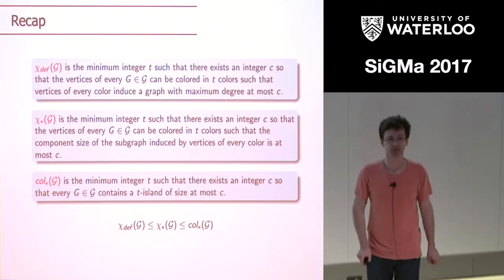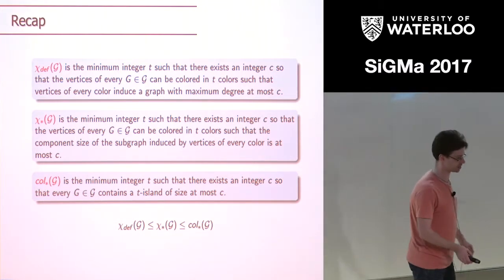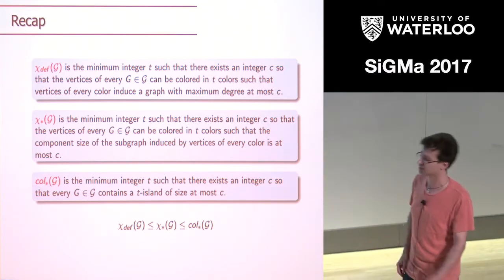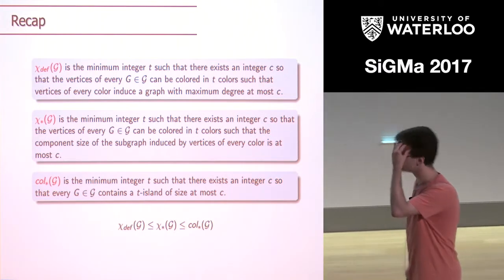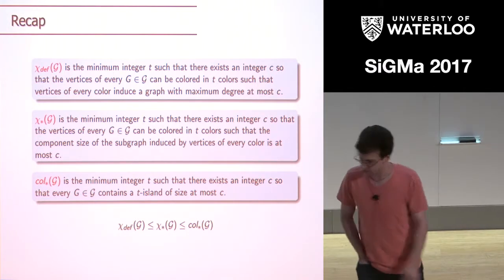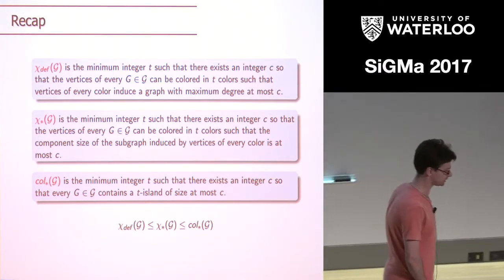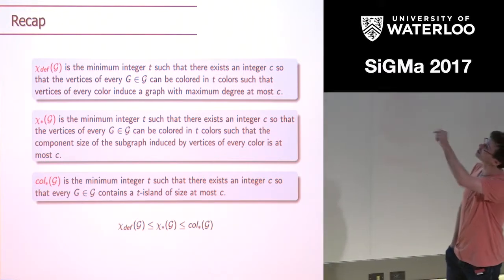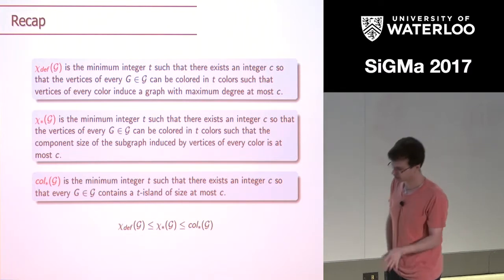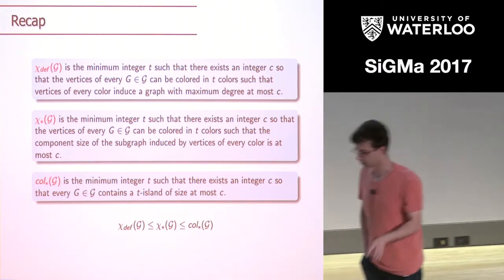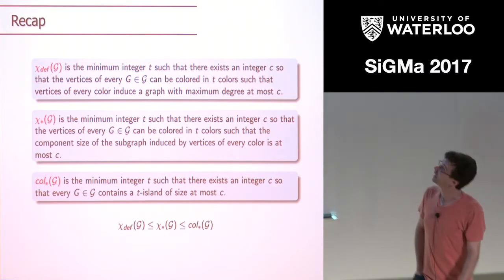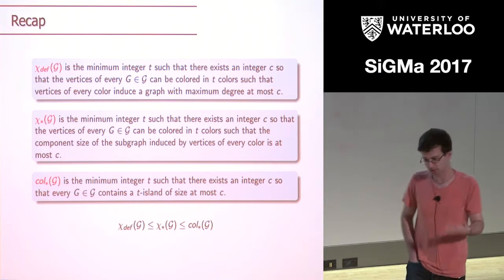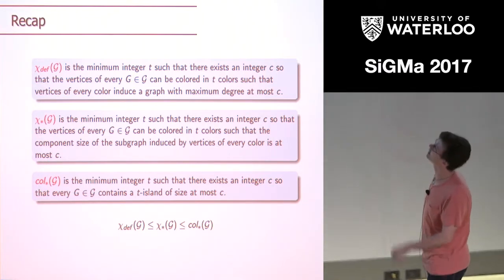I switched from defective chromatic number to improper. But it is already a theorem that the star chromatic number and defective/improper chromatic numbers are tied, within a factor of three. Chun-Hung and Sangil proved that if you have bounded maximum degree, you can three-color with bounded-size components. So the difference is within a factor of three in a very strong sense: first color with bounded defect, then every color class can be three-colored with bounded component size.